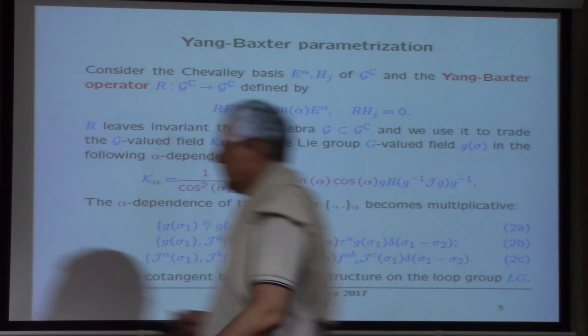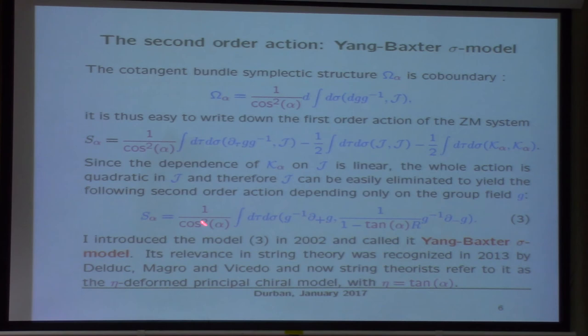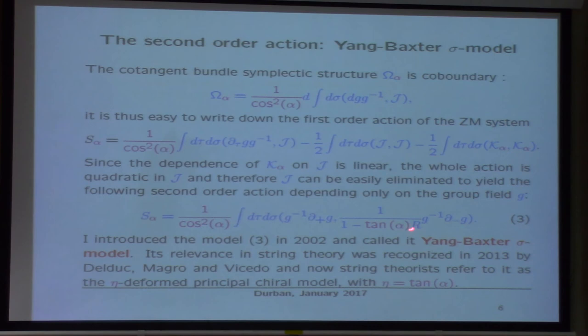What is amazing is that this system — the Yang-Baxter model — whatever coordinates you use, if you calculate the beta function it comes out zero as a miracle. The radiative corrections just move this parameter α and nothing else, meaning this model keeps its Poisson-Li structure even in the quantum case, which is probably related to quantum groups.